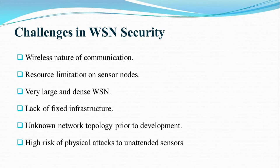If we are talking about challenges in wireless sensor network security, the first challenge is the wireless nature of communication. The second is resource limitation on sensor nodes. There is also very large and dense WSN and lack of fixed infrastructure — because of the ad hoc nature there is no fixed infrastructure. Ad hoc is useful at the time of disaster, but it is very difficult to save data from attackers.